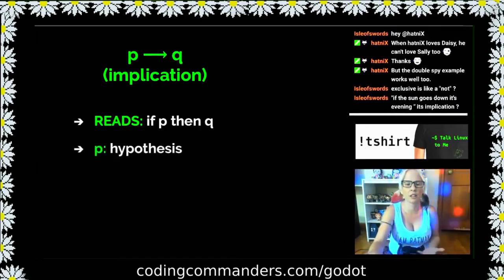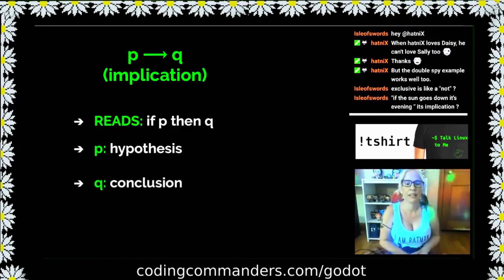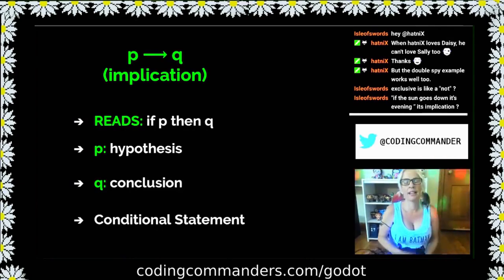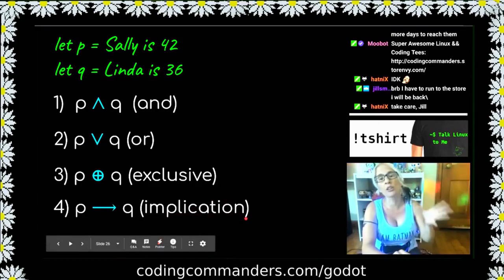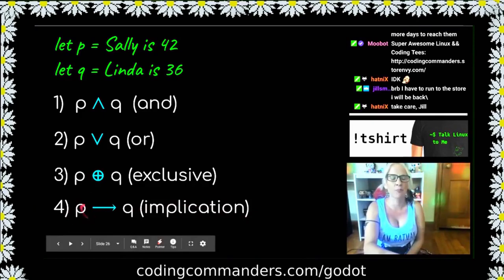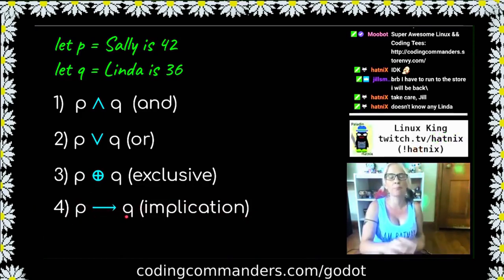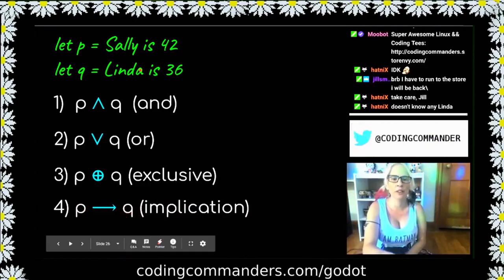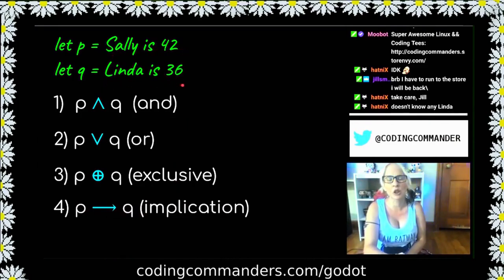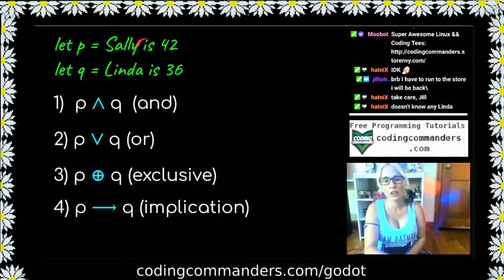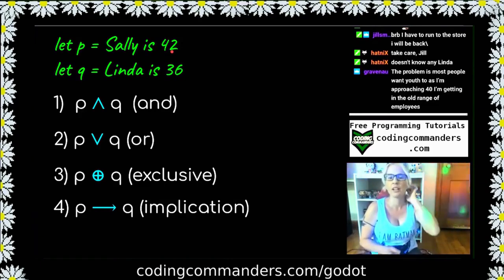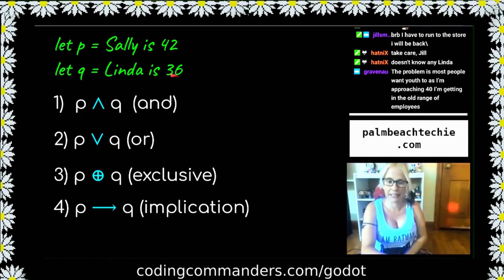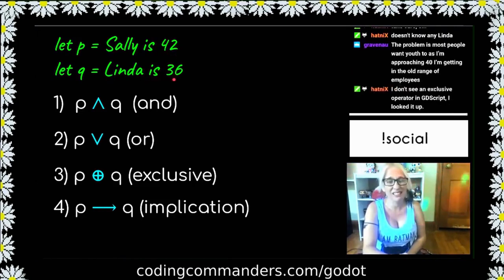Implication reads, if p then q. P is called the hypothesis and q is called the conclusion. And this is a conditional statement. Now, if statements directly come from implication, so this is an important one because we're going to use implication to construct our if statements. This reads, if p then q. Or you could also say p implies q. And how this would read with our values plugged in, if Sally is 42, then Linda is 36. That means that if Sally's not 42, then the statement doesn't even matter because the statement's only going to apply if Sally's 42. If Sally's 42 and Linda's 36, it'll evaluate true. If Sally's 42 and Linda is not 36, then it's going to evaluate false.